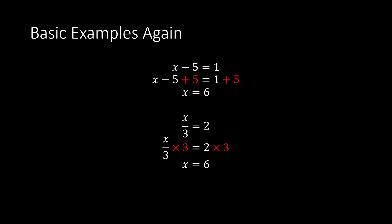For x minus 5 equals 1, we want to get rid of the minus 5, so we do the opposite and add 5 to both sides, leaving x on the left side equals 6. Similarly, for x divided by 3 equals 2, to get rid of the divide by 3 we multiply both sides by 3. Division and multiplication cancel each other out, leaving just x on the left side, and 2 times 3 equals 6 on the right.